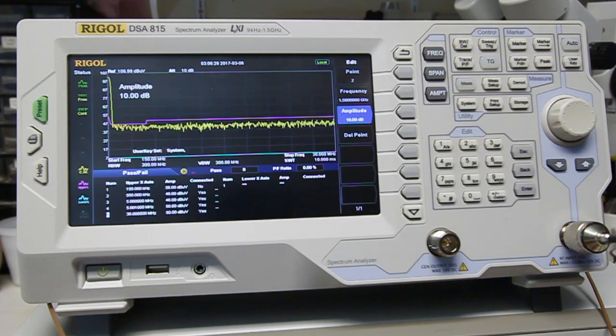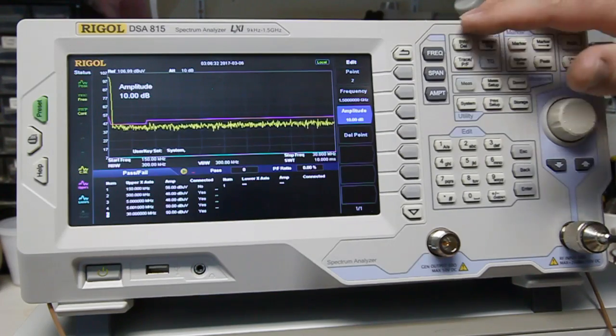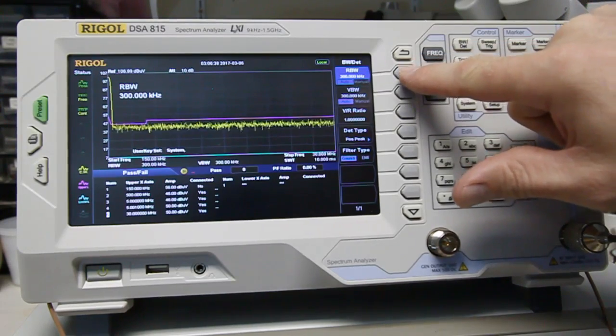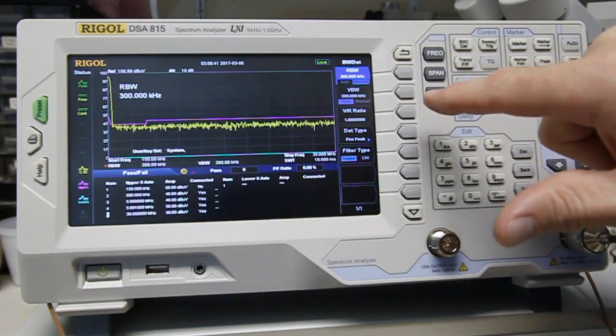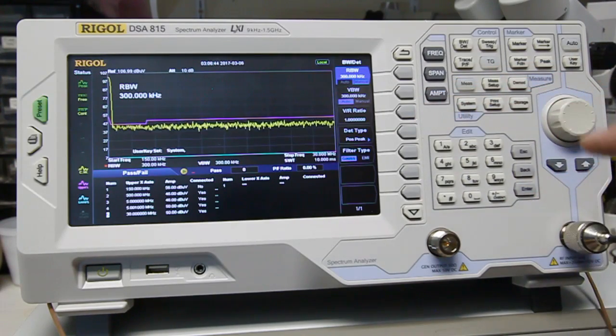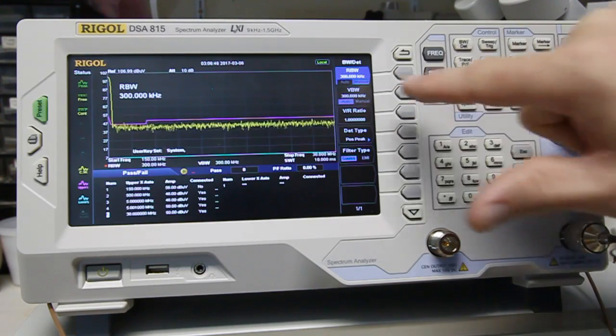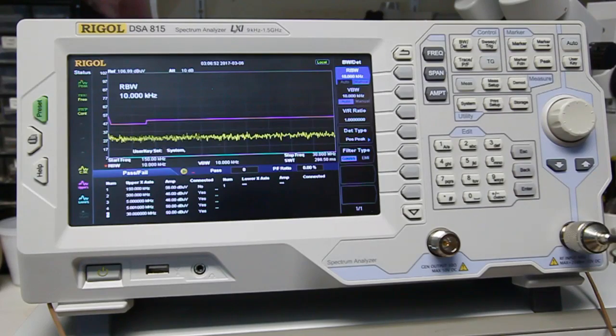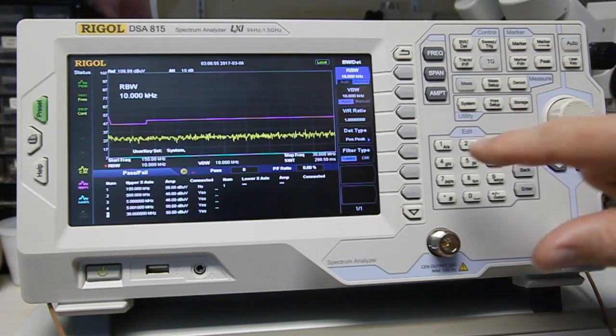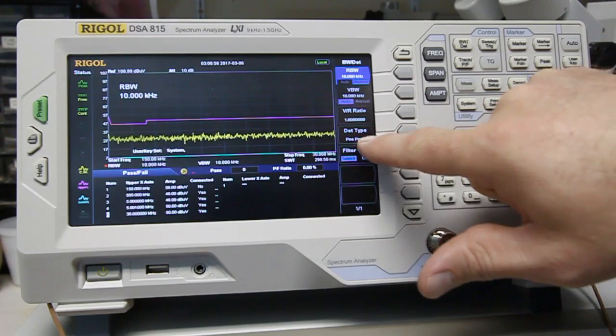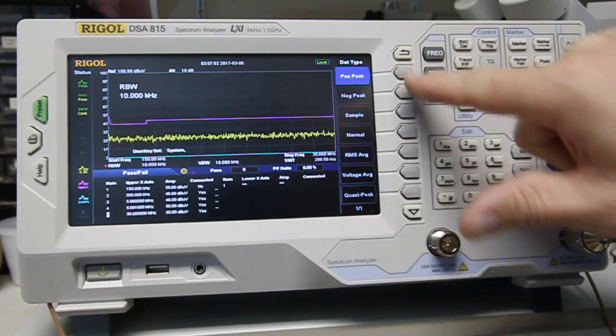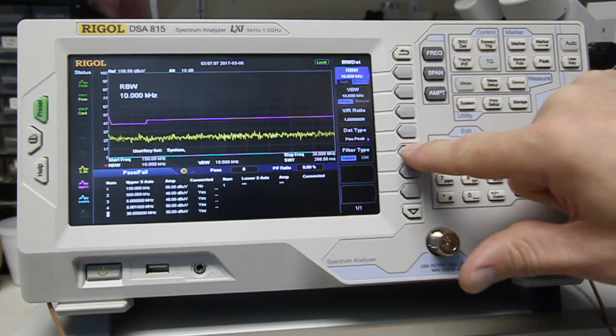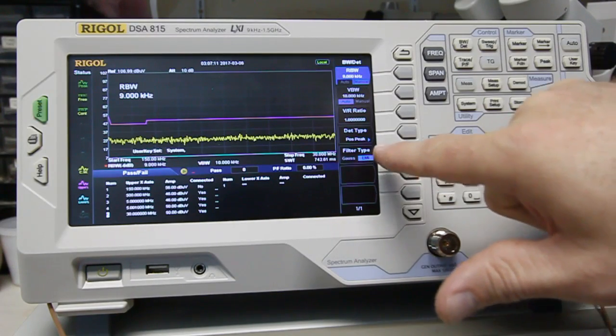Now we just need to do a couple more things for the analyzer. We're going to go into the bandwidth detector. And the RBW, per the spec, by EN55022, CISPR22, says that it should be 9 kilohertz. So RBW manual, I'm going to go to 9 kilohertz. And we should also make sure that the detector is in positive peak. Here's our settings. It is in positive peak. And let's go back to filter type. And we're going to go to the EMI for the filter type.